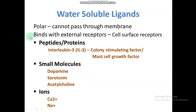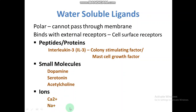Water-soluble ligands are polar in nature, so they cannot pass through the membrane. They bind with external receptors or cell surface receptors. These may be peptides or proteins — for example, interleukin-3 (IL-3), also called colony stimulating factor or mast cell growth factor. Small molecules acting as ligands include dopamine, serotonin, and acetylcholine. Ions such as calcium ions, sodium ions, and potassium ions can also act as ligand molecules.